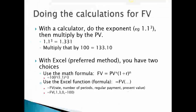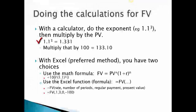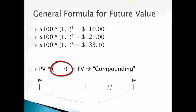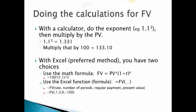For future value calculations, with a calculator you would first compute the exponent — for instance, raise 1.1 to the third power — then multiply that times the initial investment. That's slightly backwards from the formula order, but easier computationally. For example, compute (1 + r)^n first, then multiply by PV.